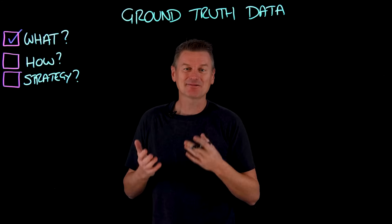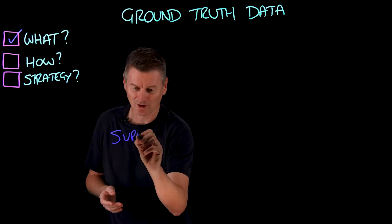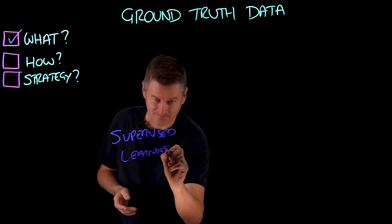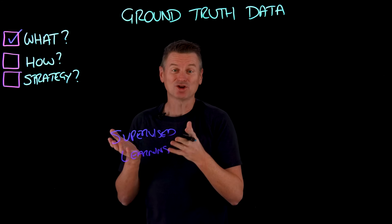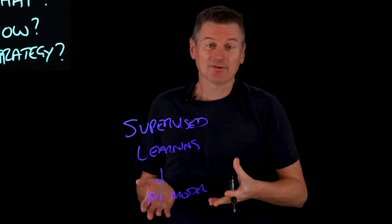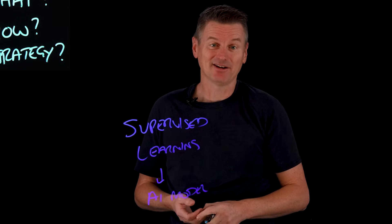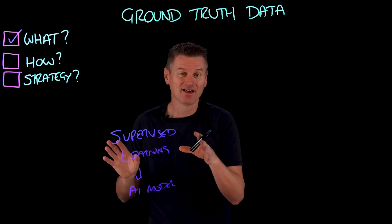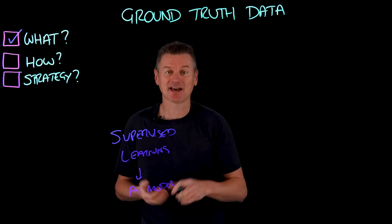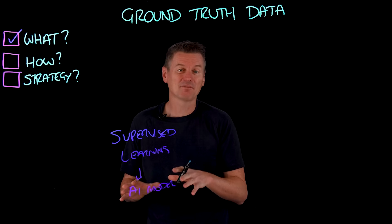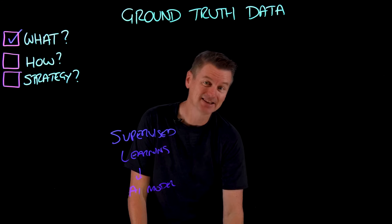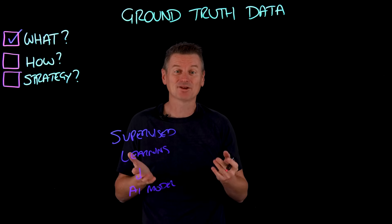Ground truth data is especially important to something called supervised learning. Supervised learning is where we train an AI model to perform tasks like classification and regression. Supervised learning models are the tech behind image recognition, predictive analytics, spam detection and stuff like that. In order for an AI model to learn how to perform those tasks, we need to teach it, and we teach it through labeled data. So we need some ground truth.